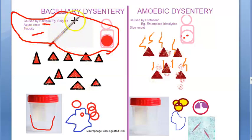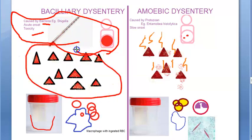All these symptoms came suddenly. This can be caused by bacteria, for example Shigella. Tenesmus will also be present — that means this patient always has the urge to pass stool. That urge is called tenesmus, and it will be present in bacillary dysentery.